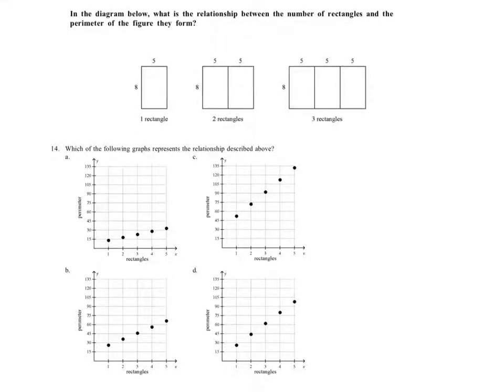Okay, so what we're seeing here is another problem related to this, continuing this problem with the rectangles and the total perimeter, and it says which of the following graphs represents the relationship described above?